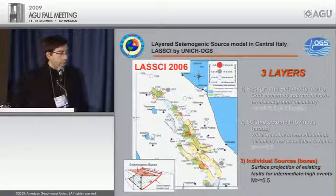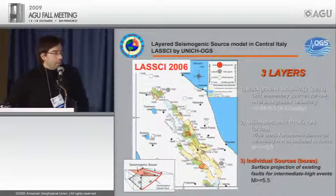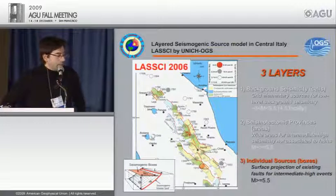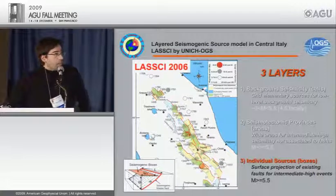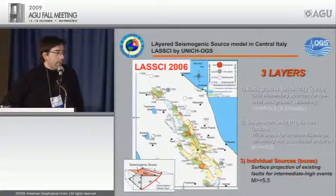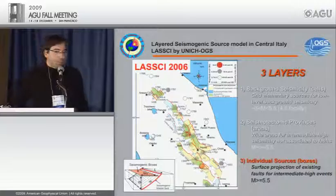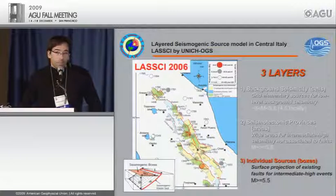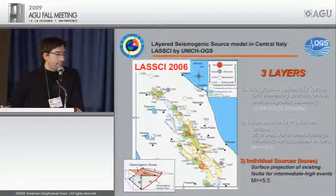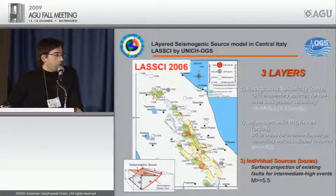The third layer is individual source boxes built from the active fault map, each associated with high seismicity above magnitude 5.5. Using instrumental, historical, and paleoseismological data, each box is assigned a seismogenic behavior: a characteristic earthquake, a Gutenberg-Richter behavior, or a hybrid combining a characteristic earthquake peak plus a Gutenberg-Richter tail. Historical events are associated to determine the time of last event and elapsed time, used with a Brownian Passage Time distribution to calculate conditional probability.